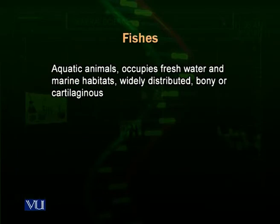Fishes are aquatic animals. They are present in fresh waters, marine waters, ponds, lakes, rivers, streams, oceans, seas, and even in the frozen seas. They are present in almost all types of water bodies.